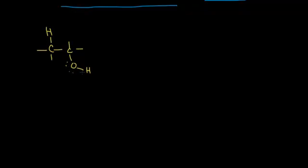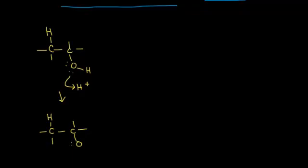Sulfuric acid is a strong Brønsted-Lowry acid that donates protons in solution. The alcohol functions as a Brønsted-Lowry base, accepting that proton. One of the lone pairs on oxygen forms a bond with the proton. Drawing the product of that acid-base reaction: one lone pair did nothing and remains, the bottom lone pair formed a new covalent bond with the proton, and we still have one hydrogen on the oxygen. Calculating formal charge on this oxygen gives a plus one formal charge.